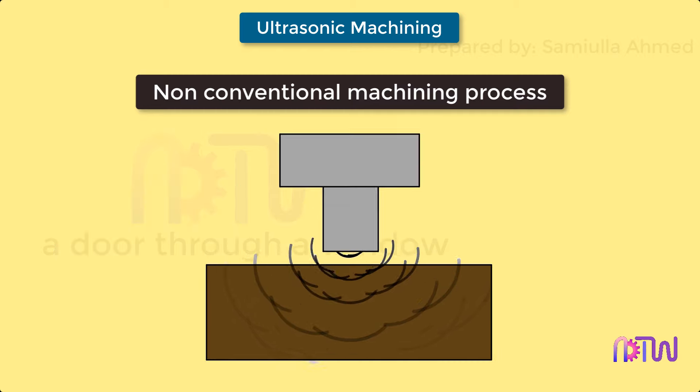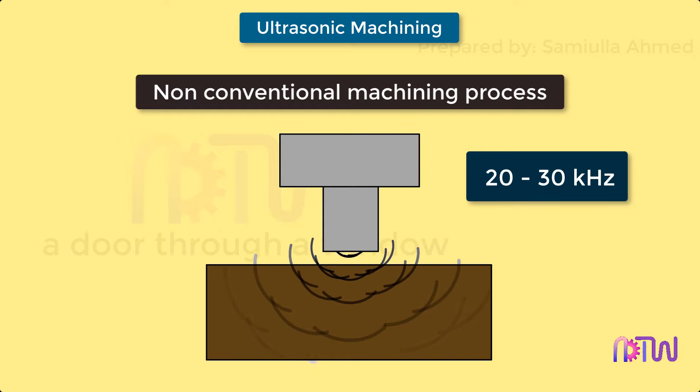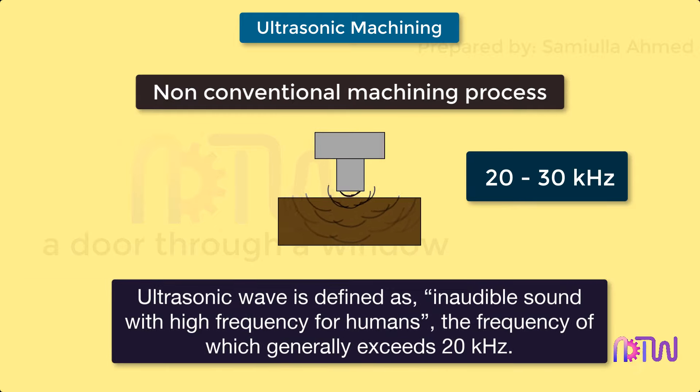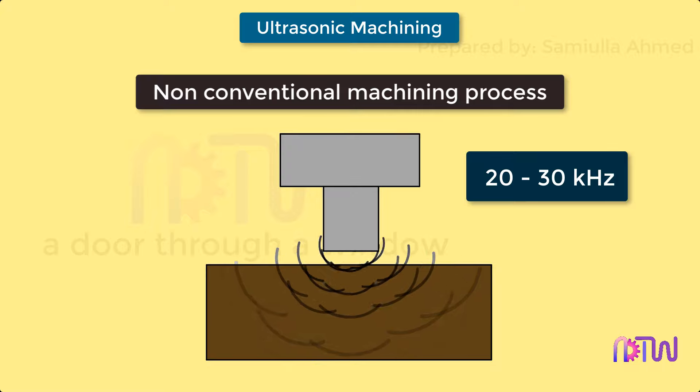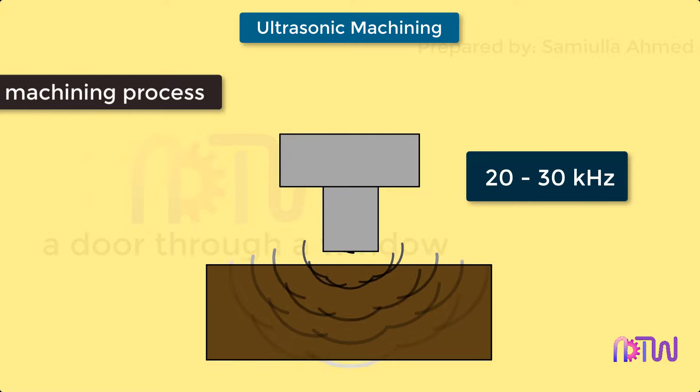Ultrasonic vibration in the range of 20 to 30 kilohertz is used. Ultrasonic wave is defined as inaudible sound with high frequency for humans, generally exceeding 20 kilohertz. This high frequency vibration combined with slurry suspended with abrasive particles is used for machining.